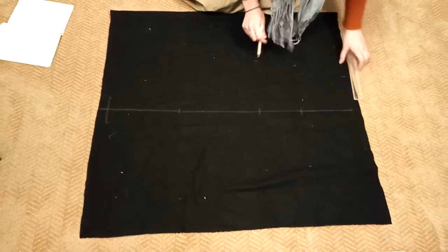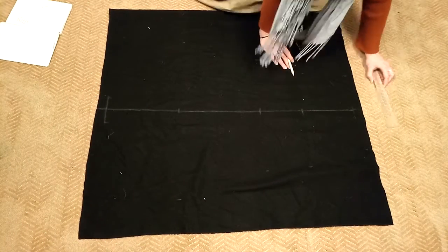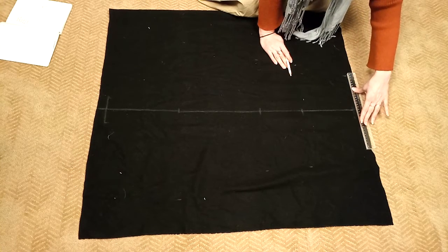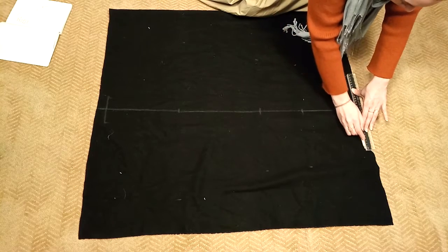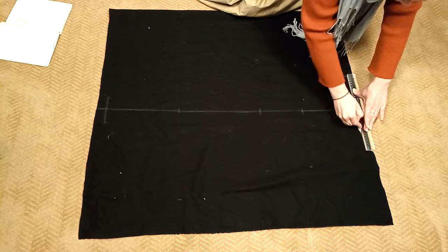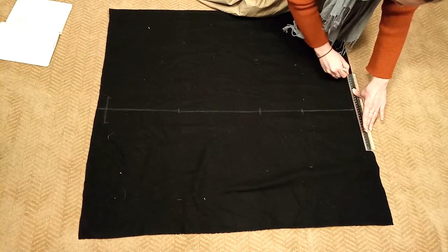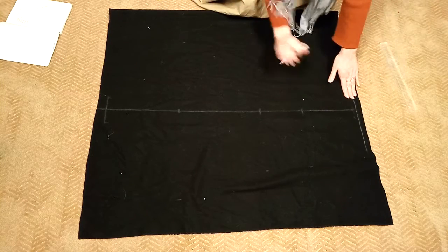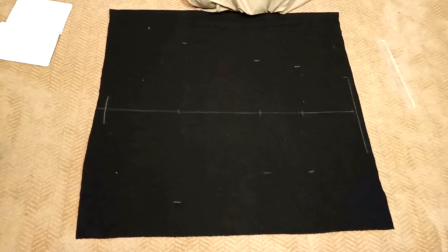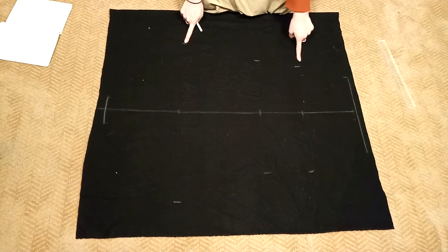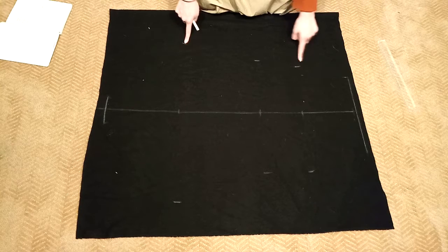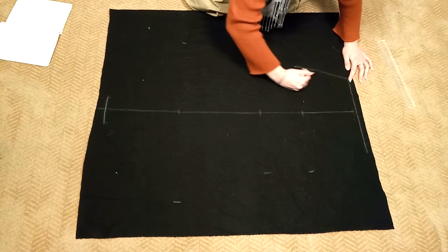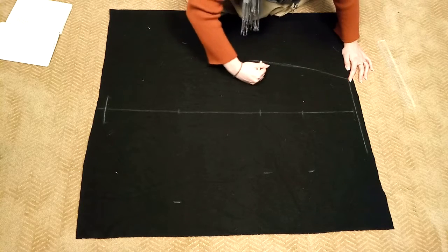And then for the bottom of the hose I'm just going to draw out the measurement that I got for my ankle, and then go ahead and mark out the circumference of your other points like I've done here. And then it's just going to be a join the dots sort of deal. And there you have your pattern.